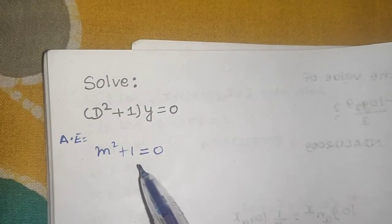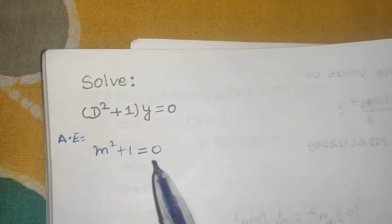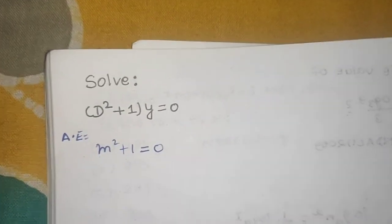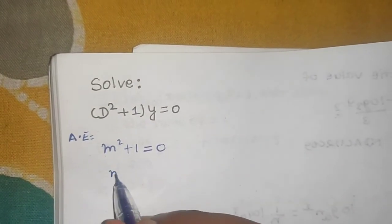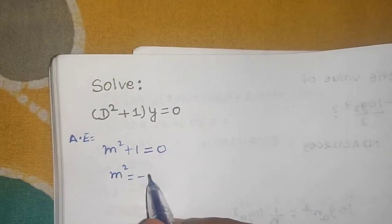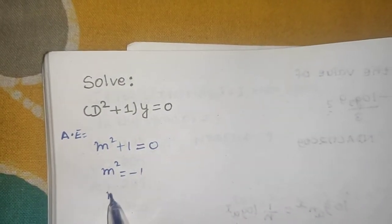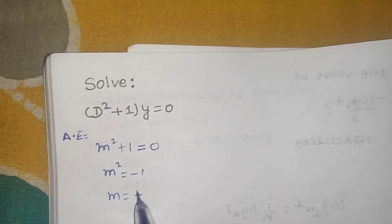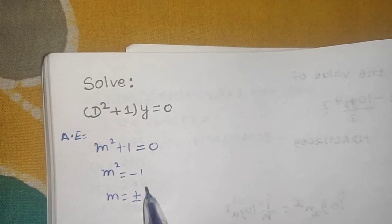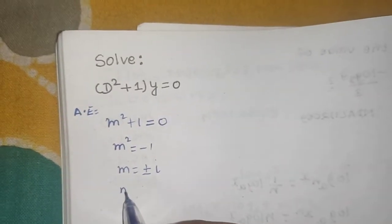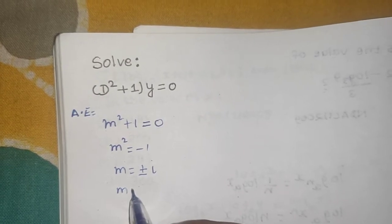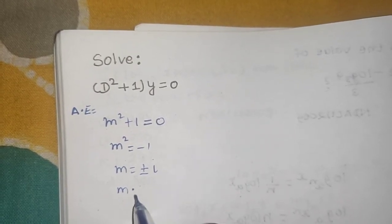From here you are getting m square equals to minus 1, so m equals to plus minus iota. Now I can write this m as two roots, first one being 0 plus iota, second one being 0 minus iota.